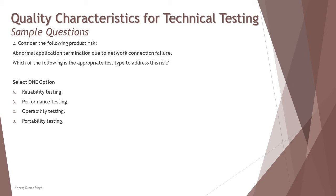Question number 2: Consider the following risk — abnormal application termination due to network connection failure. Which of the following is the appropriate test type to address this risk? There are two things: the main concept, which is abnormal application termination, and the root cause behind it — network connection failure. When addressing a risk, you know what the risk is and what the main reason is, and you have a core level of testing associated with addressing that type of risk.